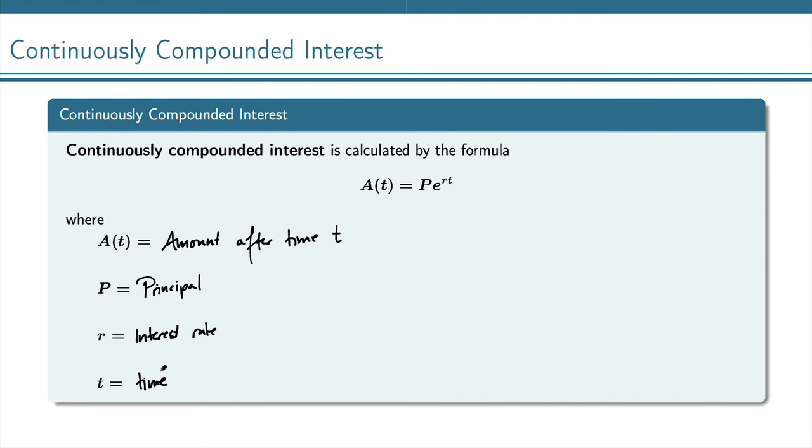And so that simplifies the compounded interest formula quite a bit for us, because if it's continuous, then we don't have this n to deal with.